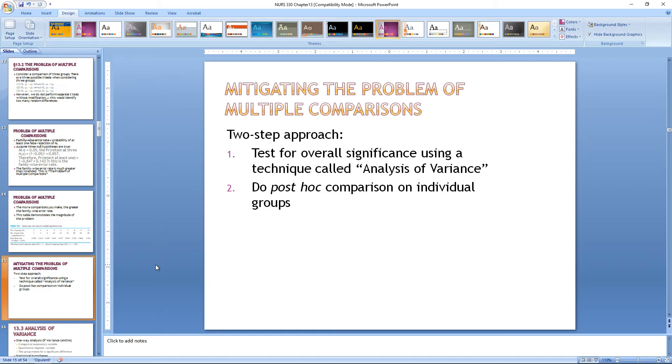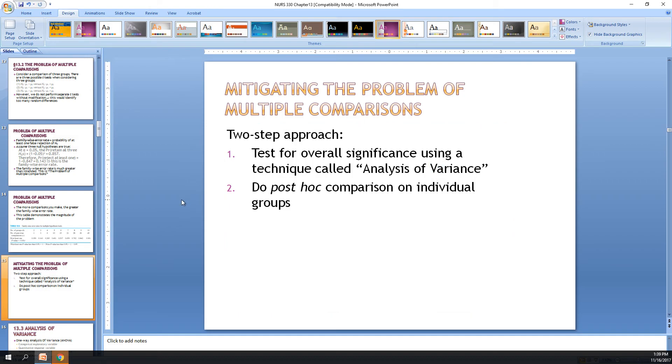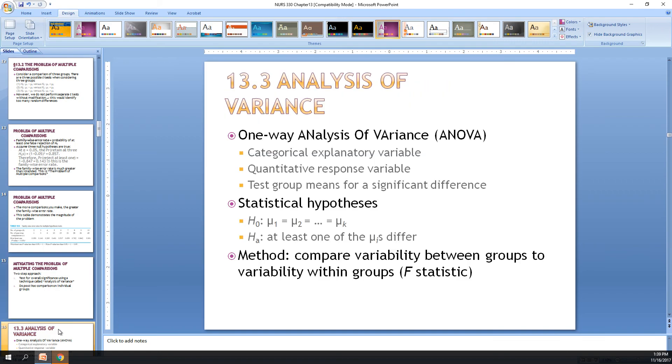So how do we mitigate the problem of multiple comparisons? There's a two-step approach: test for overall significance using a technique called analysis of variance, then do a post-hoc comparison on individual groups. If you're ever wondering where ANOVA comes from, it's the first two letters here: A-no-va, which stands for analysis of variance. After you run an analysis of variance, you can do a post-hoc comparison on the individual groups. Like I said before, I want to really go over the first three parts of this chapter, sections 1, 2, and 3. However, when we go to the post-hoc, I want to just talk more about the theory and the different statistical techniques used there.